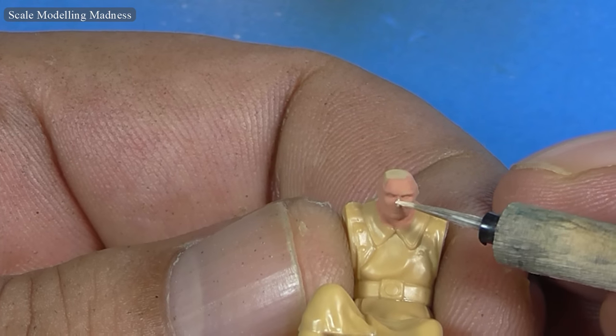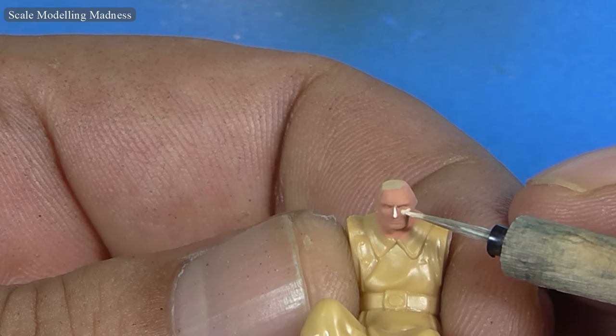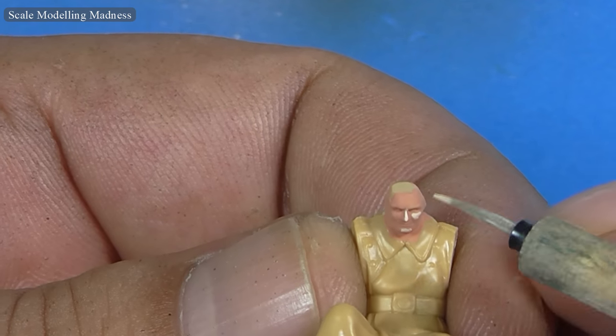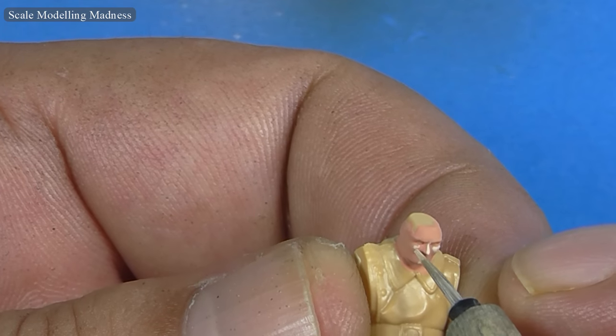Time to paint the figures. I am using AK Interactive's paint set for figures. The set has 5 paints. But seeing how small these figures are, I will only be using 3. I have already given the figures a coat of light flesh and now I add some highlights.